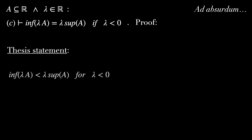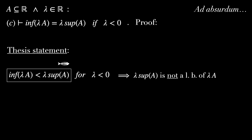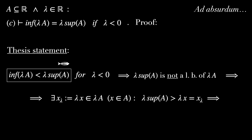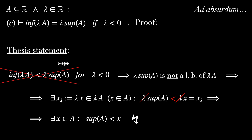Our thesis statement is that the infimum of lambda A is less than lambda times the supremum of A, for lambda non-positive — the fish inequality. This implies lambda supremum of A is not a lower bound of lambda A. So there exists an element x_lambda = lambda x in lambda A, with x in A, such that lambda supremum of A is greater than lambda x. Dividing by lambda and inverting the symbol, we get supremum of A is less than x for some x in A — which is nonsense since the supremum should be greater than all elements of A. Contradiction found.